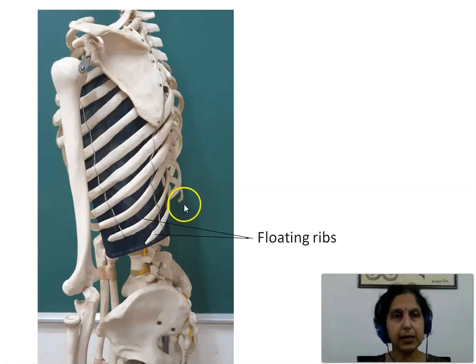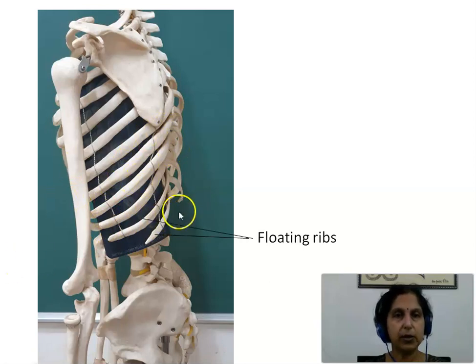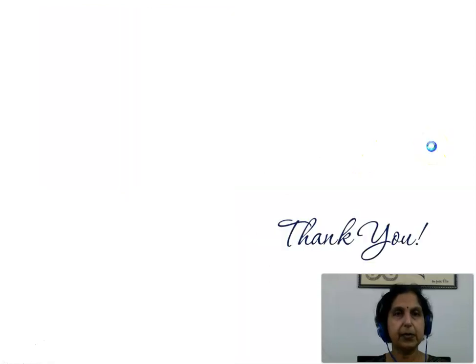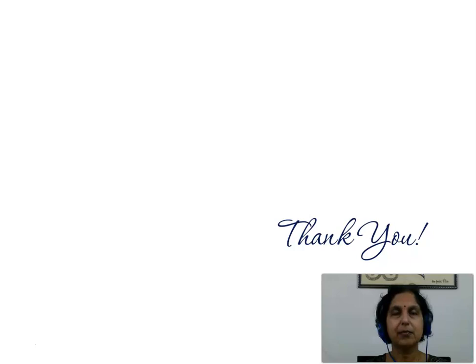Looking at the same lateral view of the thoracic cage to appreciate the floating ribs — what we see here is the 11th and 12th ribs. Their anterior ends are free, thus they are called the floating ribs. So we have seen the introduction to the ribs and the different ways in which we can classify them. Thank you.